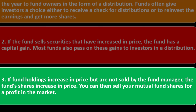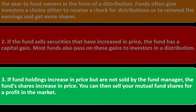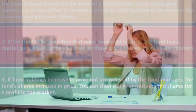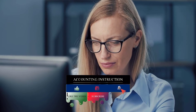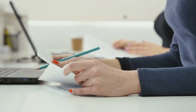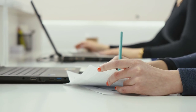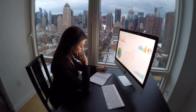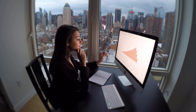Number three: if fund holdings increase in price but are not sold by the fund manager, the fund's shares increase in price — these are unrealized capital gains. You can then sell your mutual fund shares for a profit in the market. So generally, from a mutual fund you may receive dividends flowing through from stocks, interest from bonds, capital gains distributions when the fund sells securities at a gain, and if you sell your mutual fund shares after they've increased in price, you would realize a capital gain — similar to owning an individual stock that had increased in price.